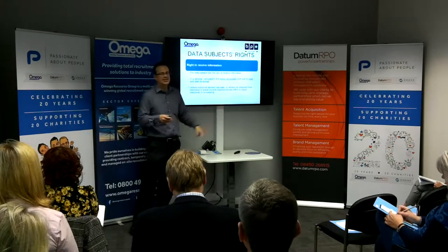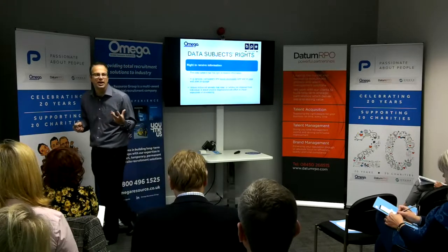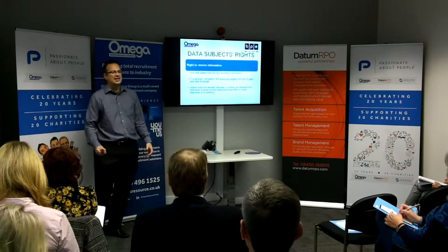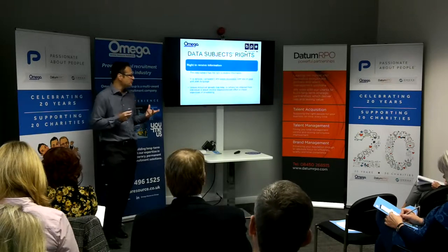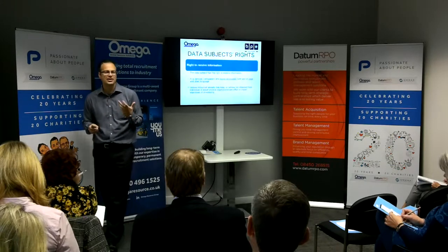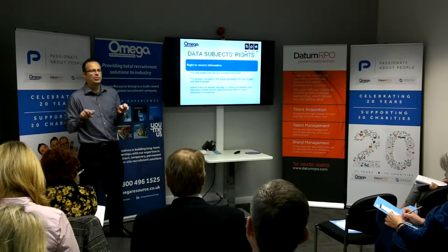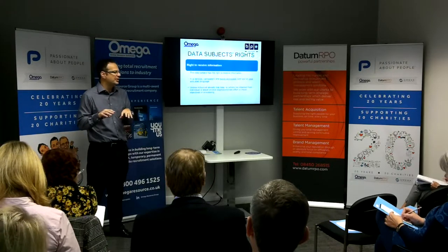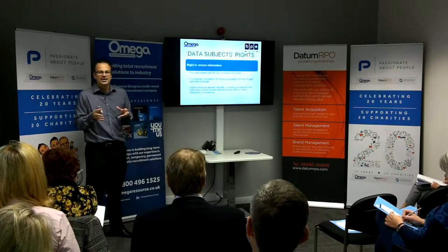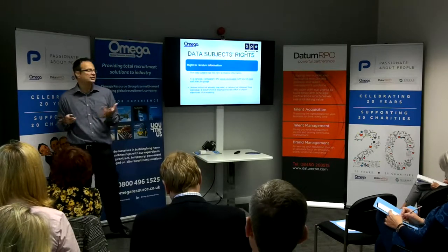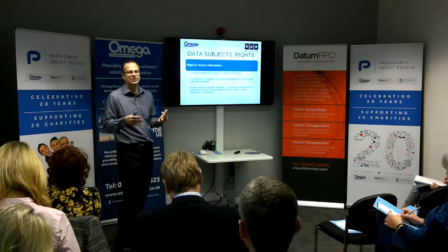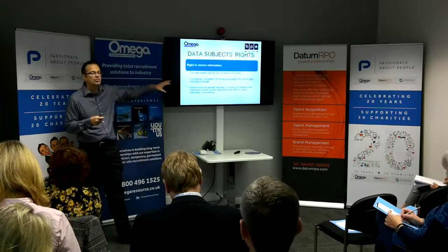The most easily accessible way to get this information to people is a privacy statement or privacy policy on your website, which is easily accessible to most people. Every email you send out to customers, clients, or employees — add a line in the signature that says if you want to know how we process your information, here's the link to our policy. Every individual you've ever emailed will then have been told the policy exists.